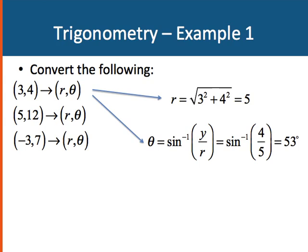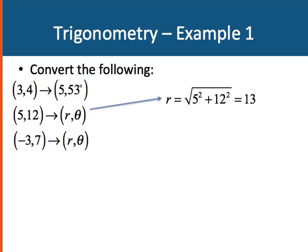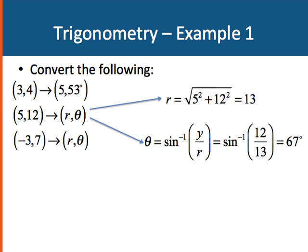How about the next one? I know that 5, 12, 13 is a special triangle, if you remember from trigonometry. If not, we can use our Pythagorean theorem. r is the square root of 5 squared plus 12 squared, which gives us 13. And then theta is the arc sine of 12 thirteenths, which is 67 degrees.